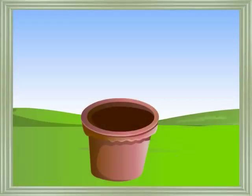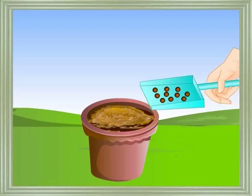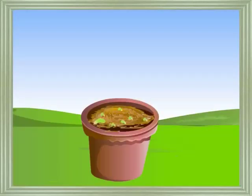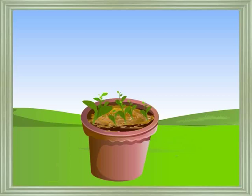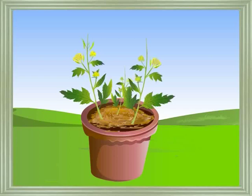You can understand the concept in your house by conducting a small experiment. Take a flower pot. Fill it with soil from the garden. Sow 10 seeds of mustard. Water the soil regularly. Observe after a few days. You will find sprouting. Count them.